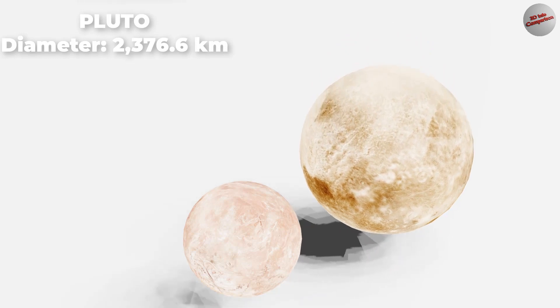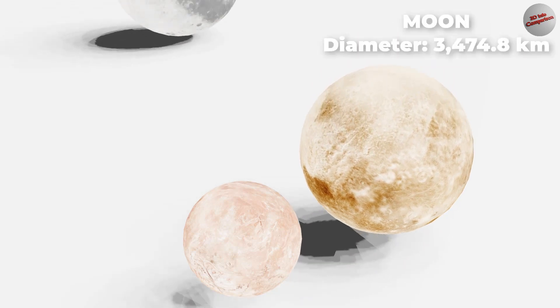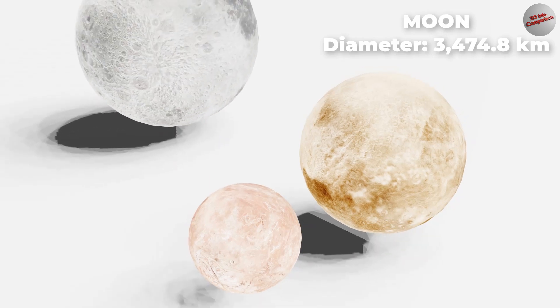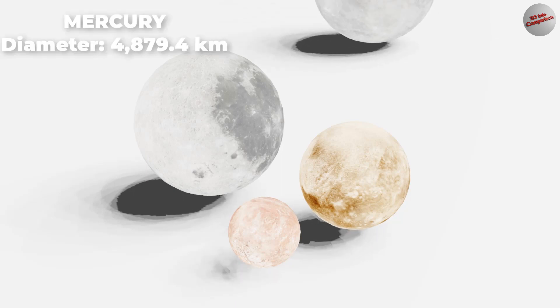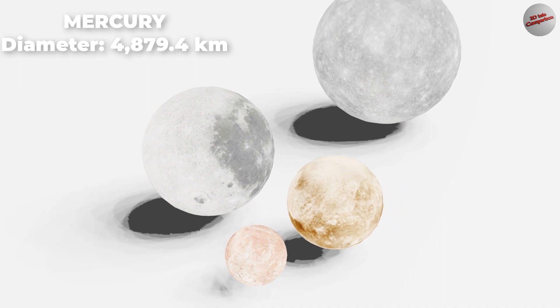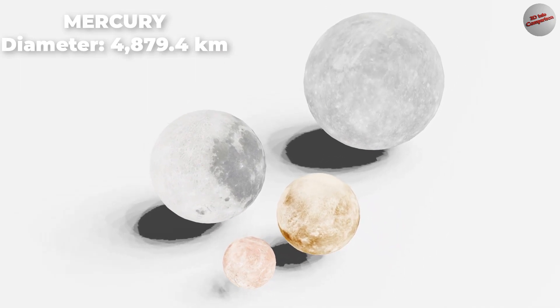The Moon is Earth's only natural satellite. It is the fifth largest satellite in the solar system and the largest and most massive relative to its parent planet. Mercury is the first planet from the Sun and the smallest planet in the solar system. It is a terrestrial planet with a heavily cratered surface.